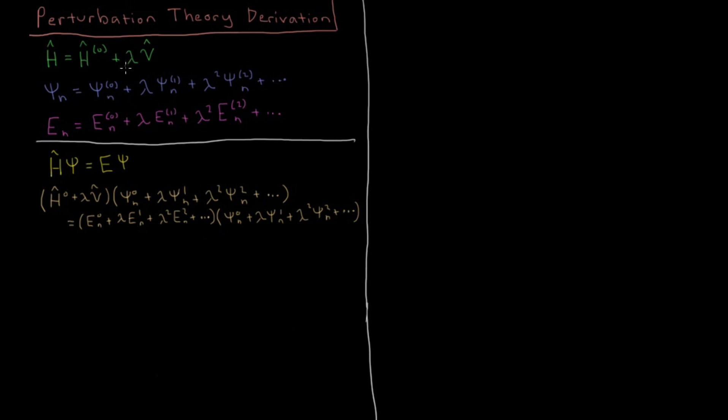We're going to have this parameter lambda here which is really just a bookkeeping parameter so that we can keep track of the different orders in perturbation theory that arise as we derive these corrections. So our wave function is going to be expressed in terms of a power series of lambda: the wave function of the reference system plus the first-order correction lambda times psi 1, plus the second-order correction lambda squared times psi 2, etc.